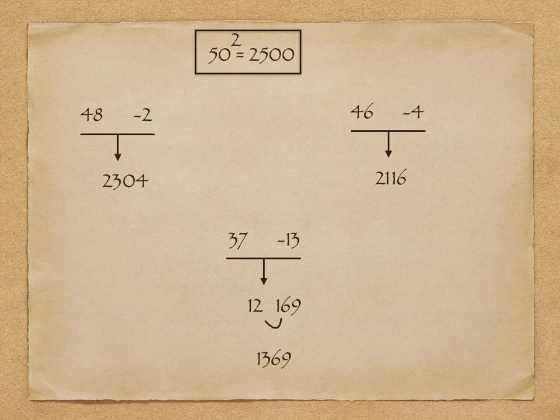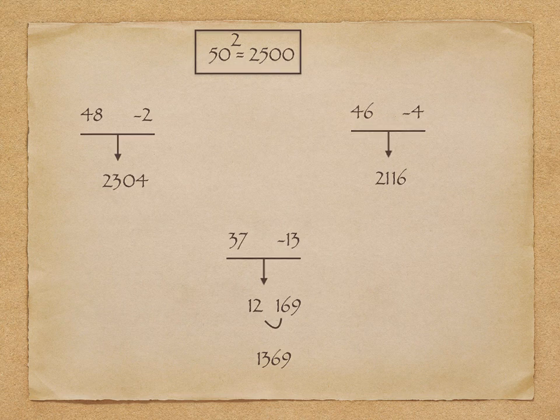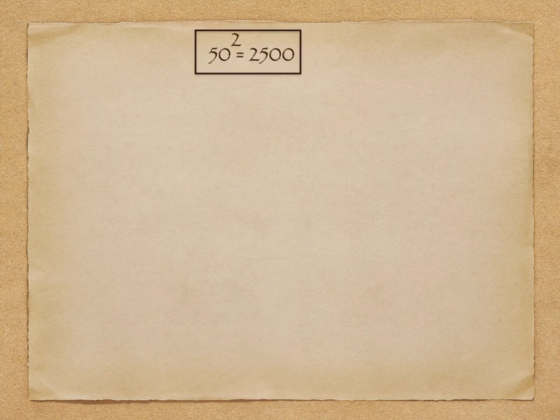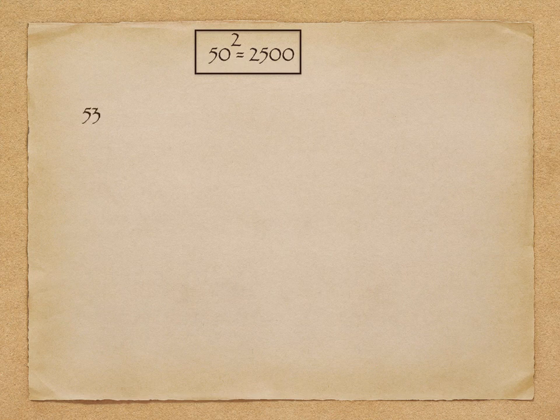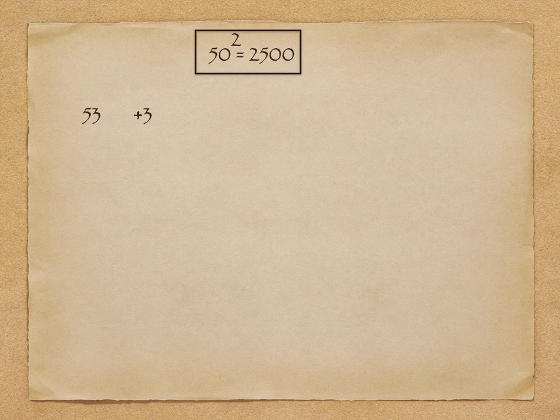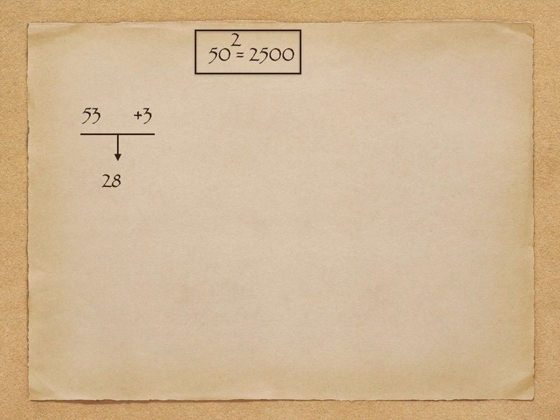Now in the second part, consider all the numbers which are greater than 50. The first number is 53. 53 is 3 more than 50. To get the answer, I will add this 3 to 25, so it will be 28, and the square of 3 in two-digit form is 09, so 2809 is the final answer.